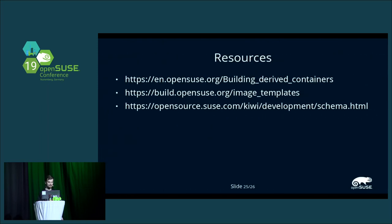Here are some resources you can use if you want to build your own images. There is a wiki page about building derived containers specifically, and also a link to the image template page on OBS. If you work with Kiwi, you definitely don't want to miss the official auto-generated documentation for the XML format, which documents literally everything you can do with Kiwi. The latest version is always at this link — it tells you exactly which XML element is expected where and what it means. It's generated from the files Kiwi uses internally to parse those XML files, so it's always correct.